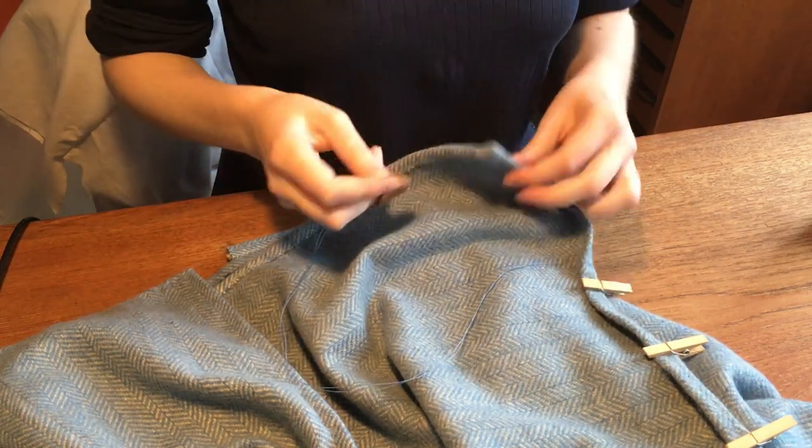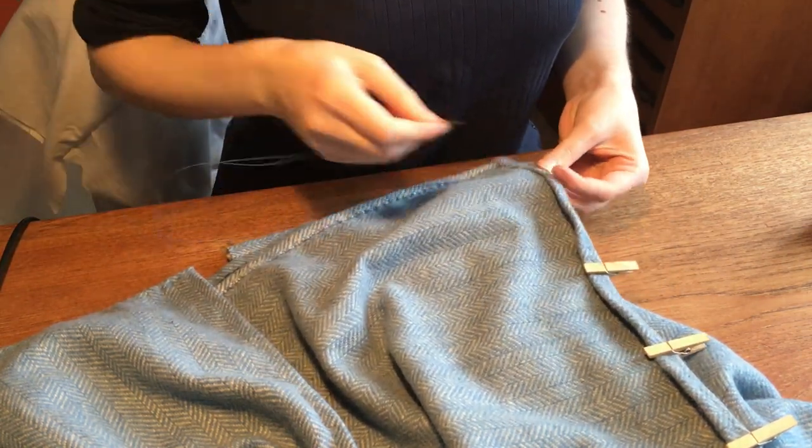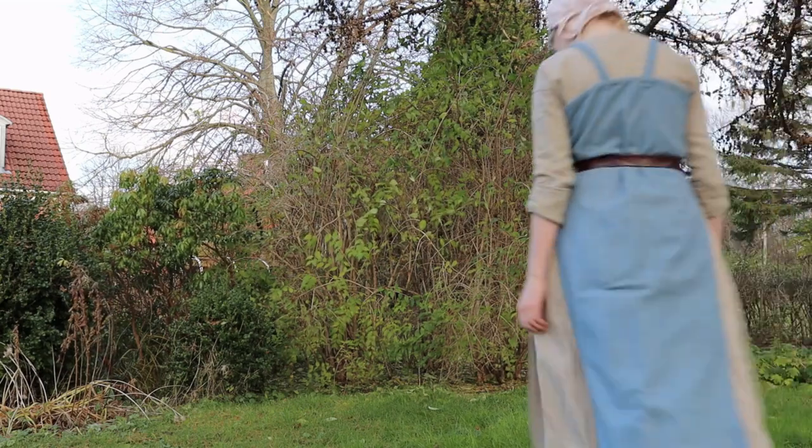So instead I rolled the top hem and finished it and then I attached the straps with whip stitches. Once the straps were on I was done.